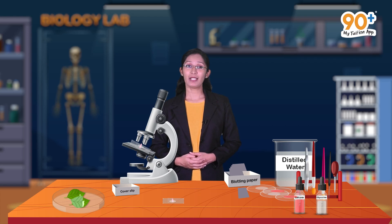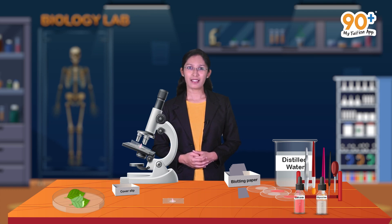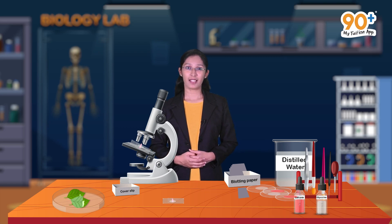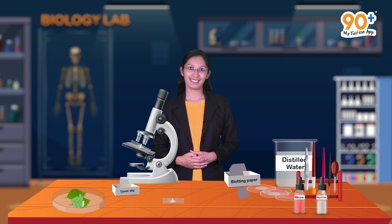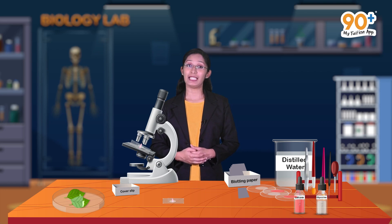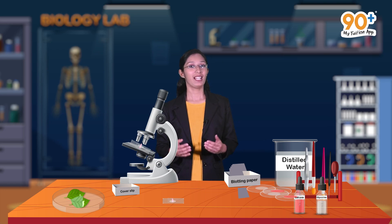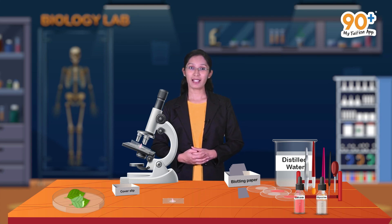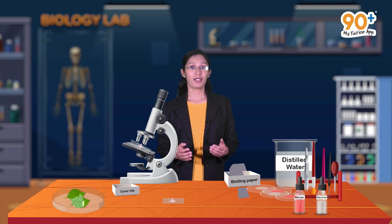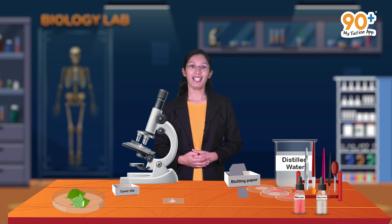Using this same procedure we can also find out stomatal distribution in the leaf of lily. The stomatal indices of the upper and lower surfaces of a lily leaf are equal. I hope through this experiment you have understood how to find out the stomatal distribution of different plants using the stomatal index equation.